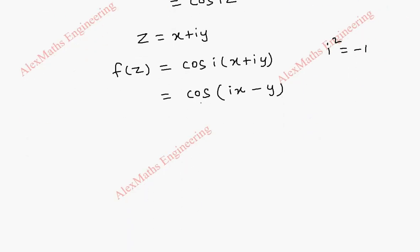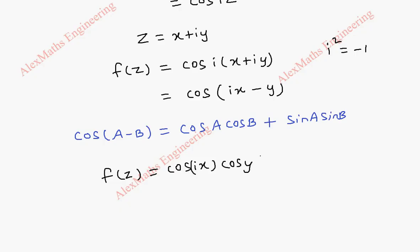Now, in the next step, we are going to expand this using cos a minus b formula. Cos a minus b is cos a cos b plus sin a sin b. So, our f of z is going to become cos ix into cos y. Instead of a, we have ix. Instead of b, we have y. Plus sin ix into sin y.